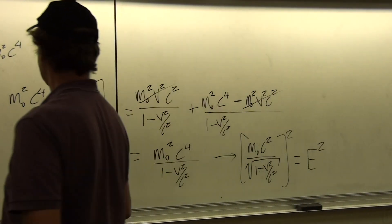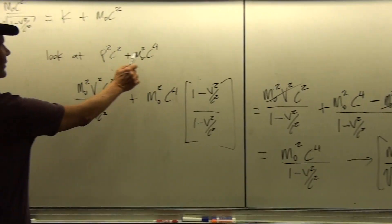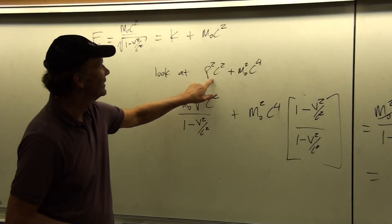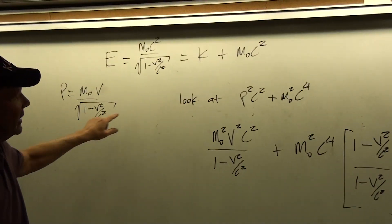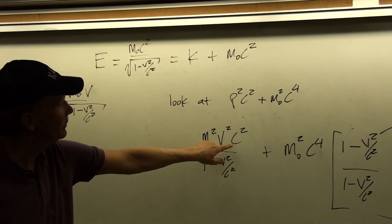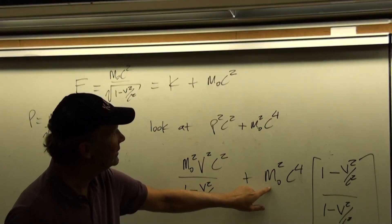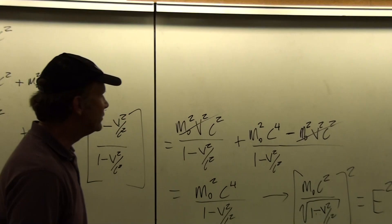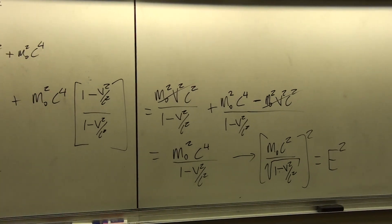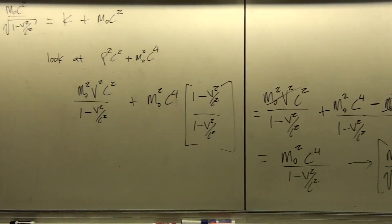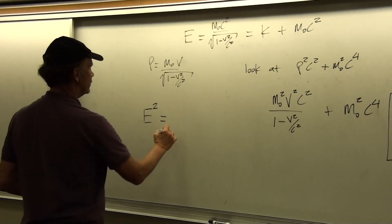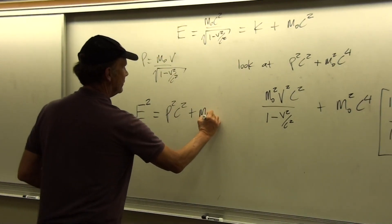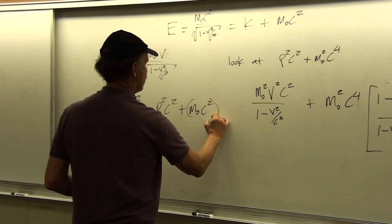So we started out this way because I knew it was going to end up being E squared, but I just wanted to show that it is. By working through our definition for relativistic momentum, multiplying by c squared, then taking the square of the rest energy and finding the lowest common denominator, I was able to show that equals E squared. So an alternative form for our relativistic energy relationship is E squared equals p squared c squared plus m-naught c squared, quantity squared.